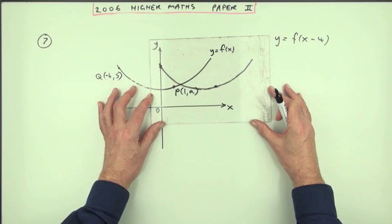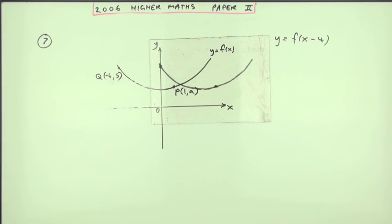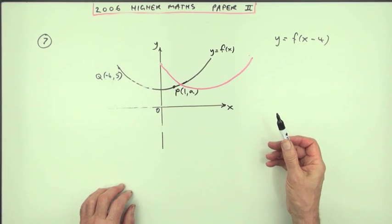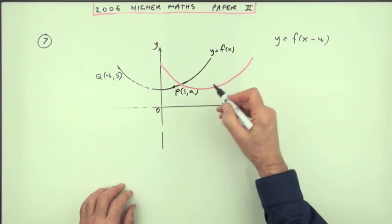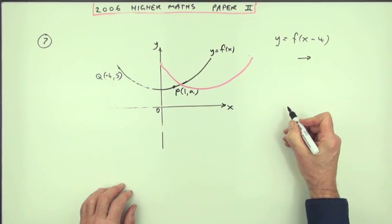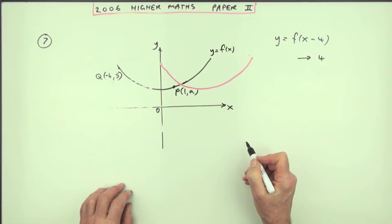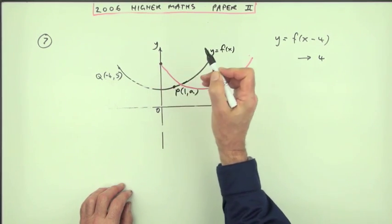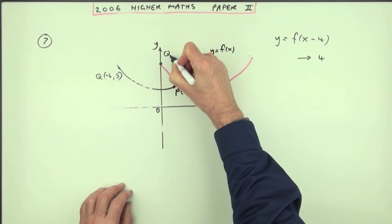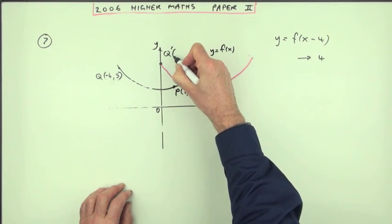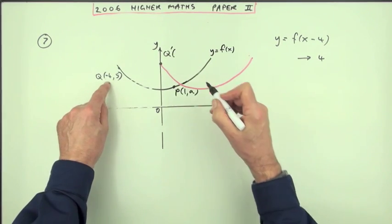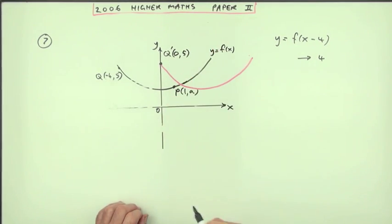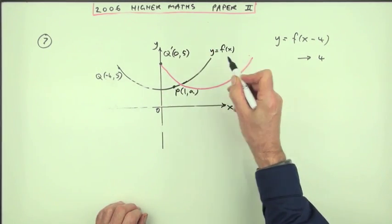That'll be the graph that's been translated forward four units. So this is the graph. There isn't a mark yet. You get one mark for knowing to shift it forward, to translate it forward four, but you need to put in the points. Well if that was Q, this is the new Q. The convention for that is to put Q with a little dash on it standing for an image. And if it's going forward four, it means the x-coordinate's now zero but the y-coordinate's still five. Now that gets you one mark, having the shifted graph and one point.